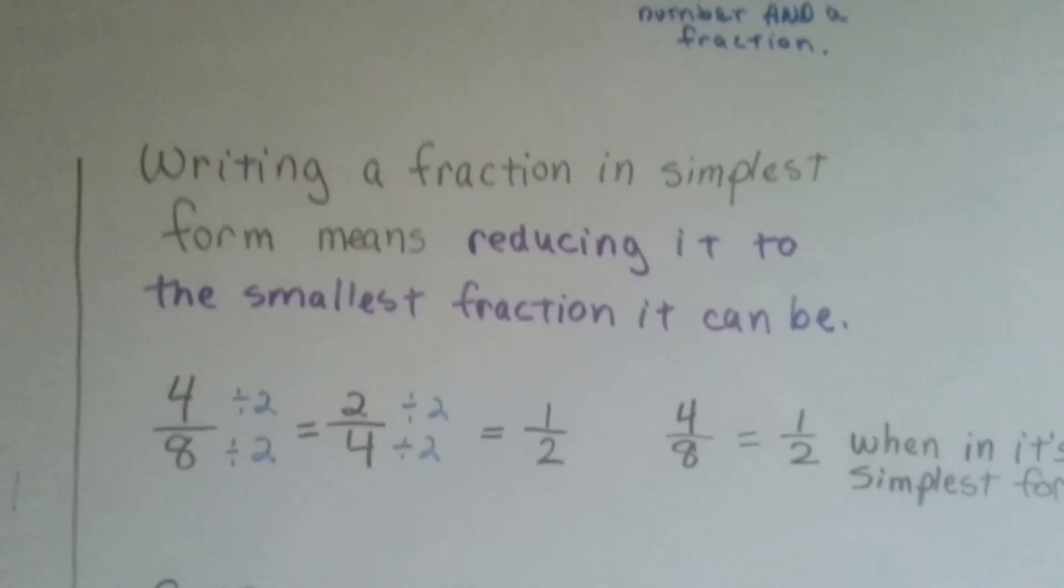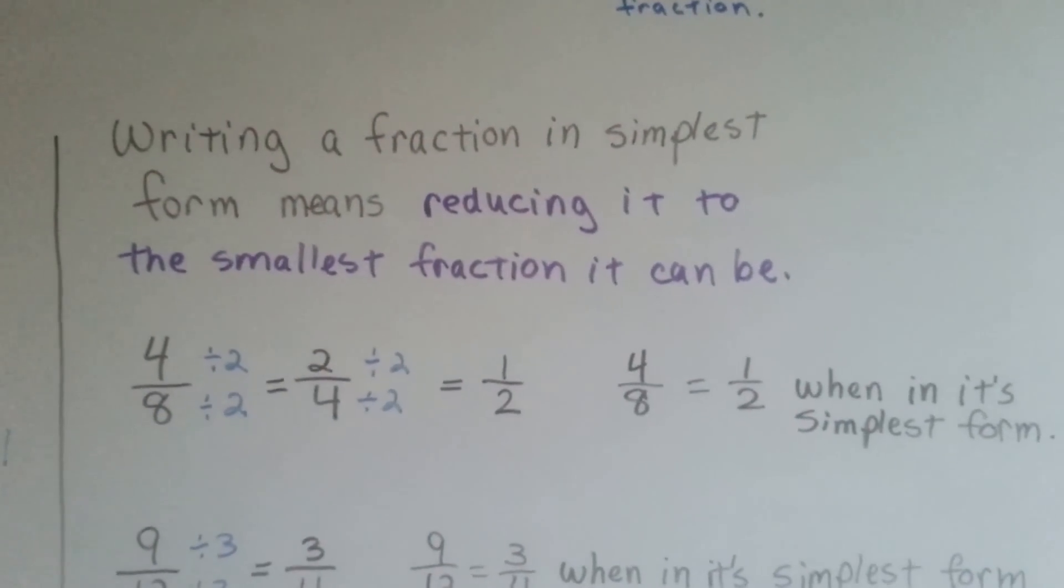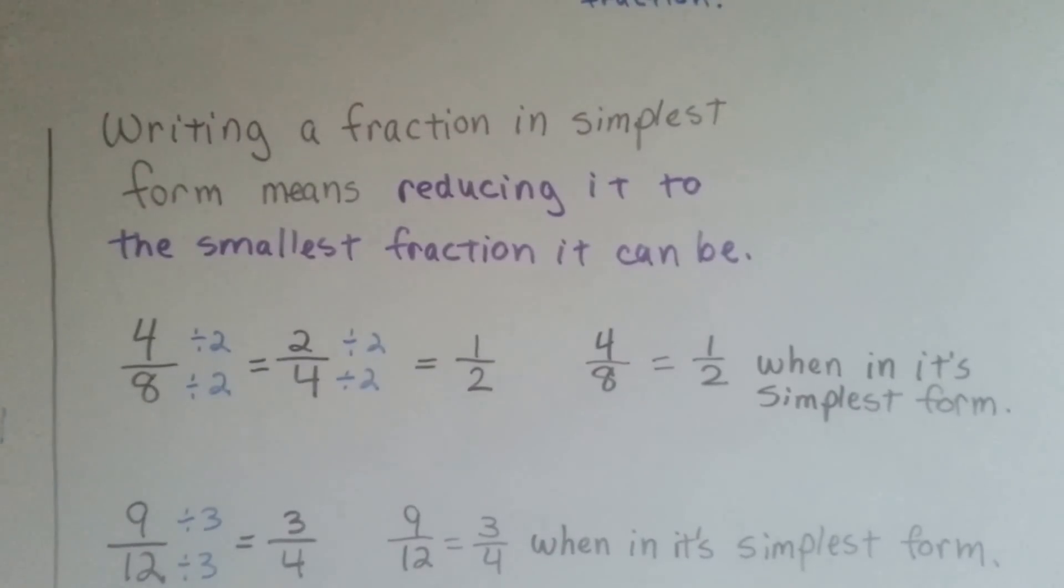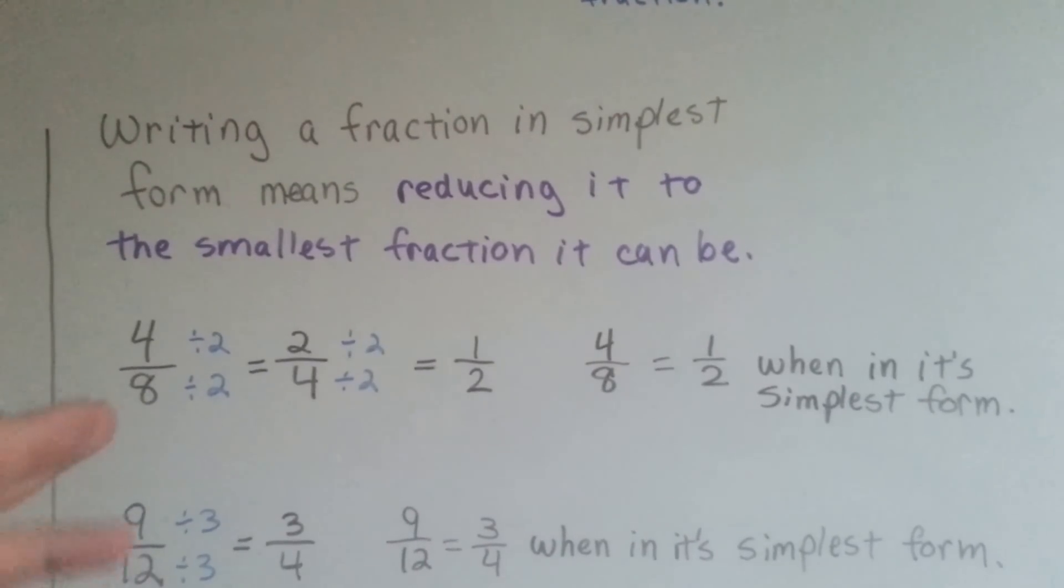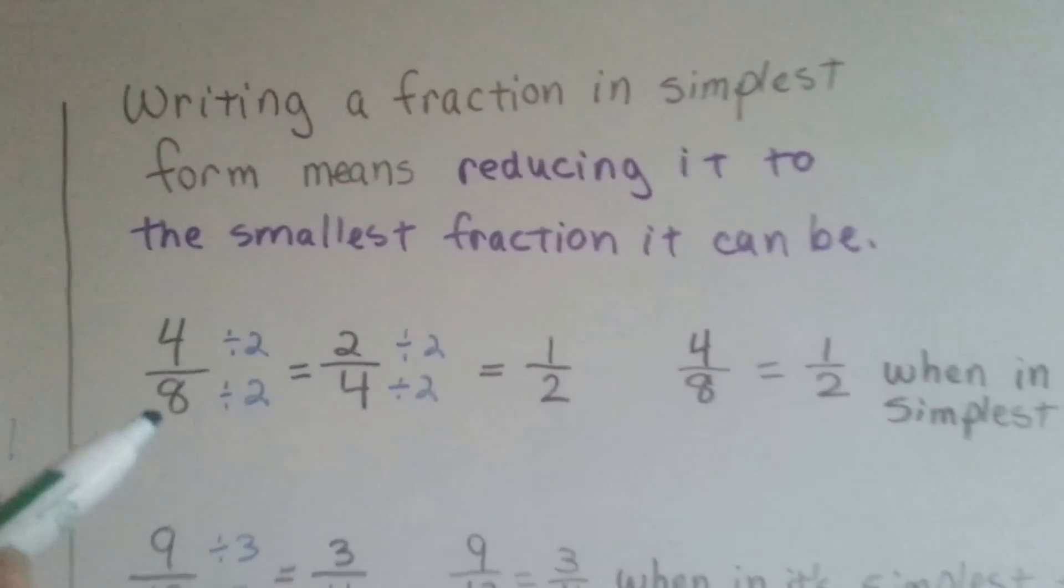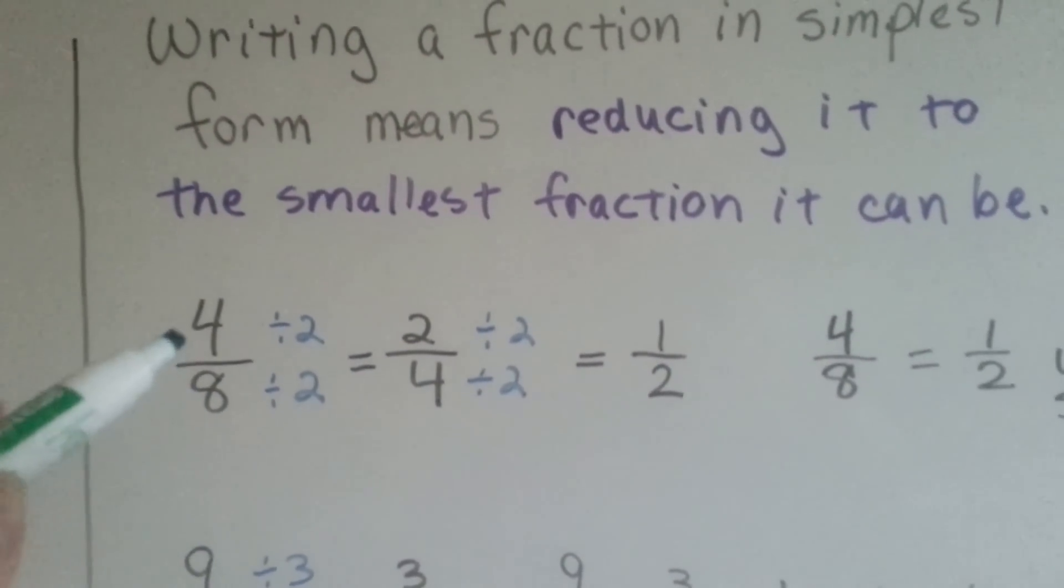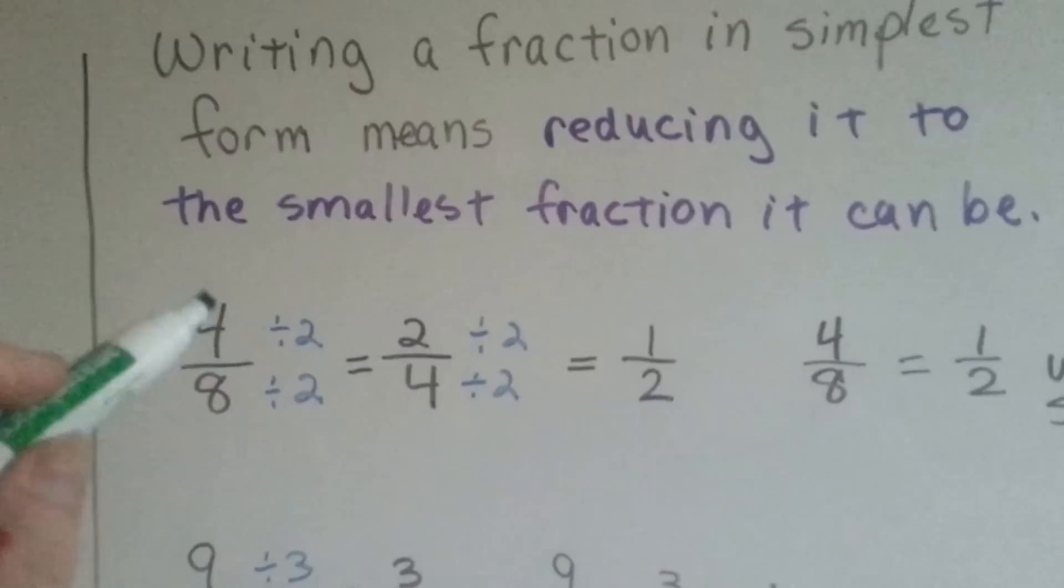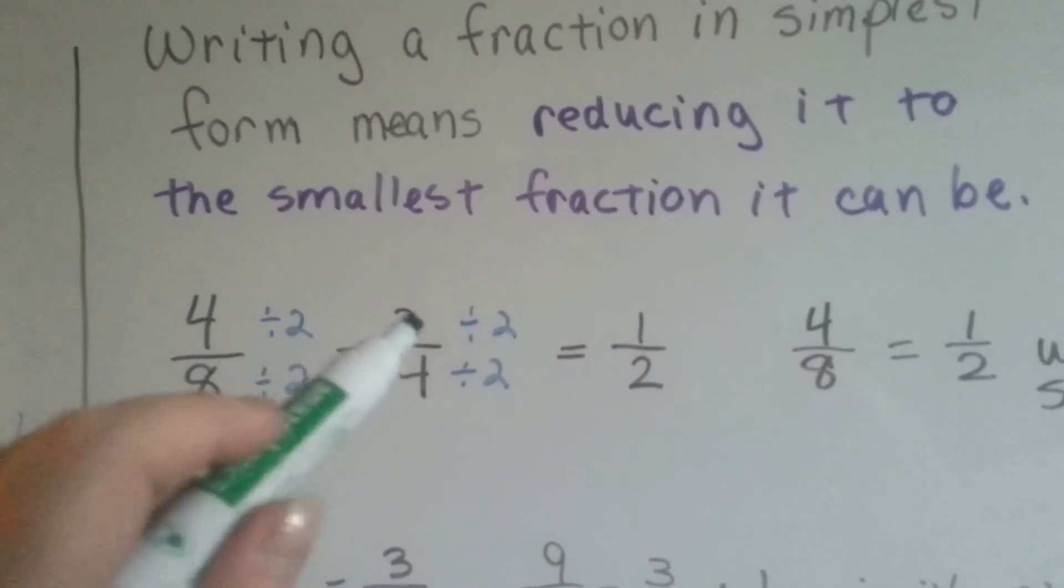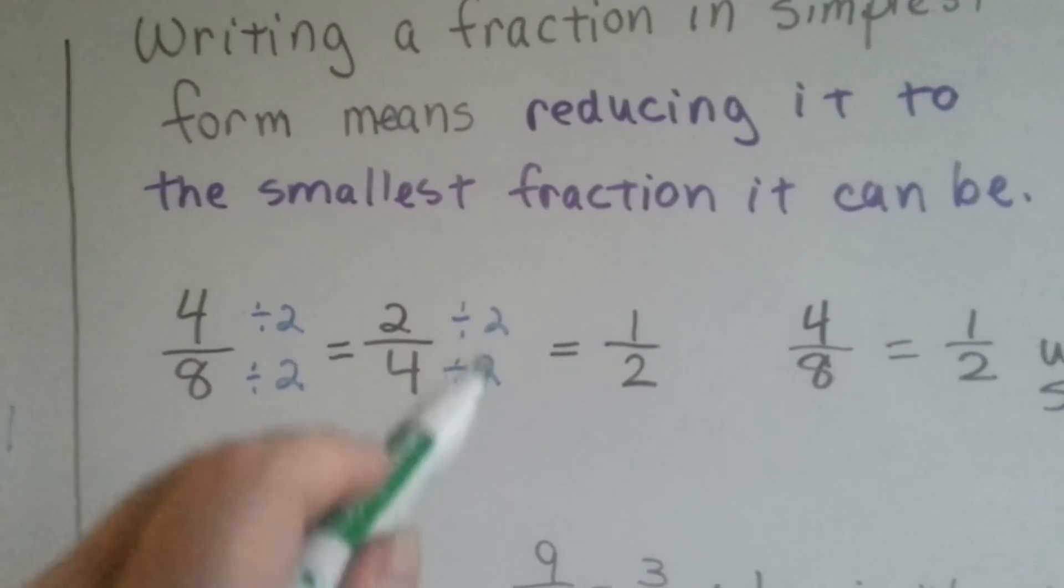Now writing a fraction in its simplest form means reducing it to the smallest fraction it can be. Sometimes we take up extra time when we could have done it quicker because we don't divide it by a big enough number. Here's an example. 4 eighths, if we want to put it in its simplest form, we could divide it by 2 because 2 goes into both numbers and it would become 2 fourths. 4 divided by 2 is 2, 8 divided by 2 is 4, but now it needs to be reduced again and divided by 2 again.